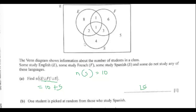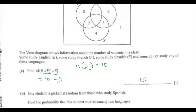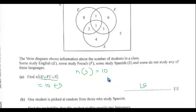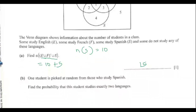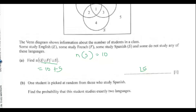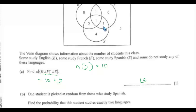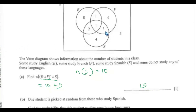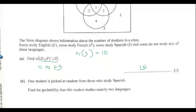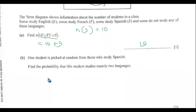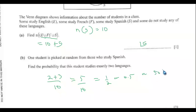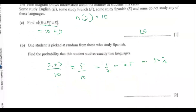Part b. One student is picked at random from those who study Spanish — remember there are 10 Spanish students. Find the probability that this student studies exactly two languages. Two people study English and Spanish, and three study Spanish and French. So the probability = (2 + 3)/10 = 5/10 = 1/2.